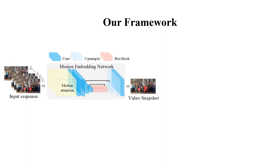The motion embedding network consists of a motion attention module and an encoder. Motion attention module is proposed to extract spatio-temporal features. Encoder is introduced for information embedding.